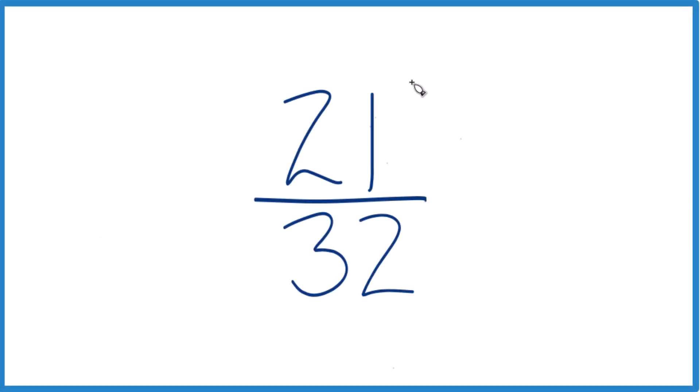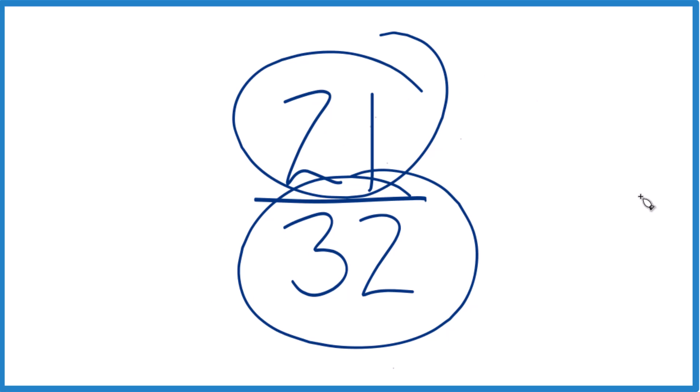Let's simplify the fraction here. We have 21/32. We want to get this in lowest terms or simplify it and reduce it down to lowest terms.